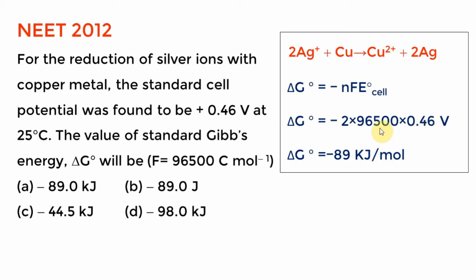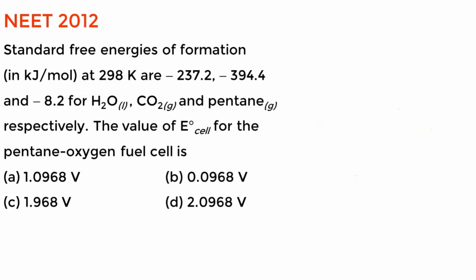Take F ≈ 100,000. 100,000 × 2 = 200,000. 200,000 × 0.46 ≈ 90,000 — because I rounded up, it is a little less than 90. Which gives option D. This problem appeared in NEET 2012.